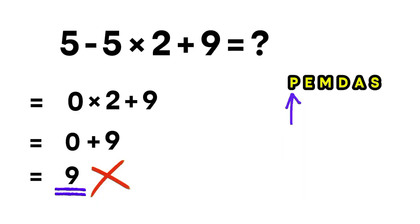That means parentheses first, then exponents, then multiplication or division from left to right, and finally addition or subtraction from left to right.